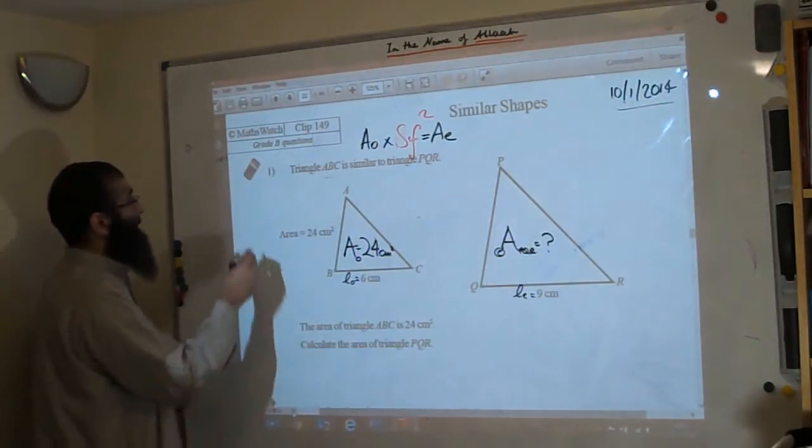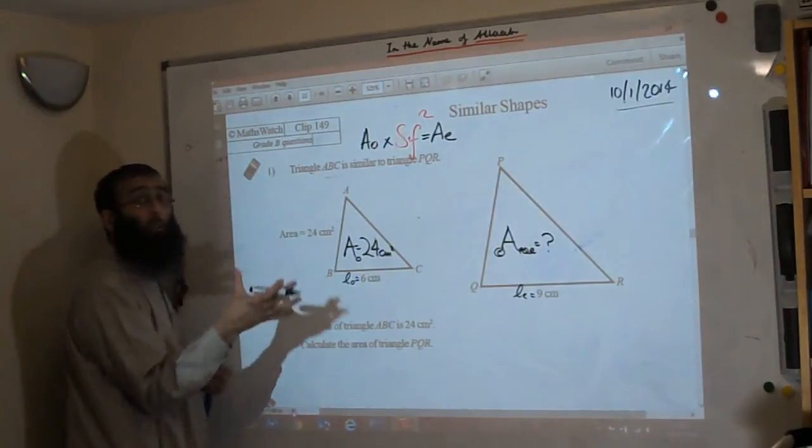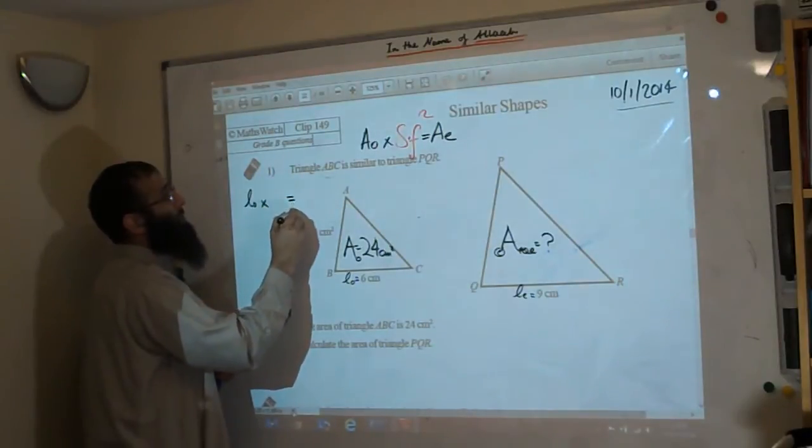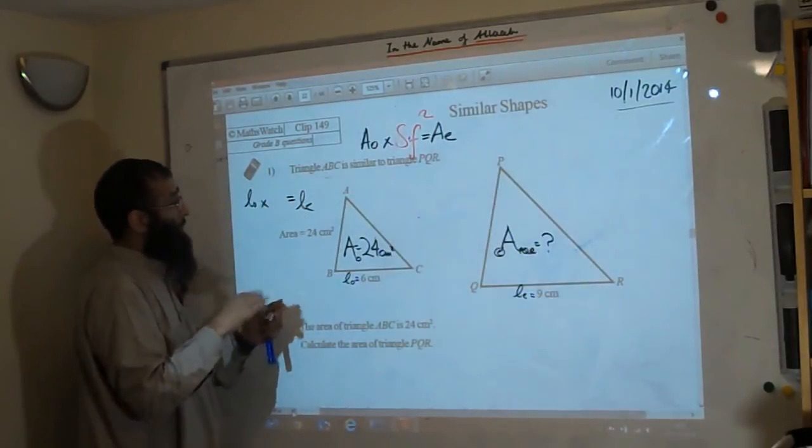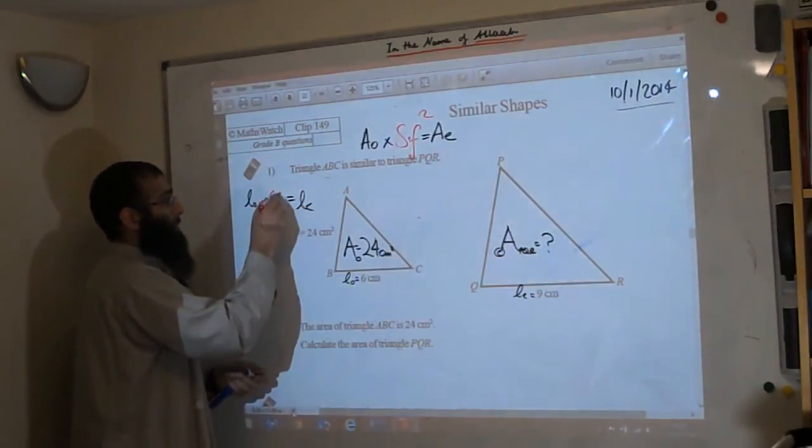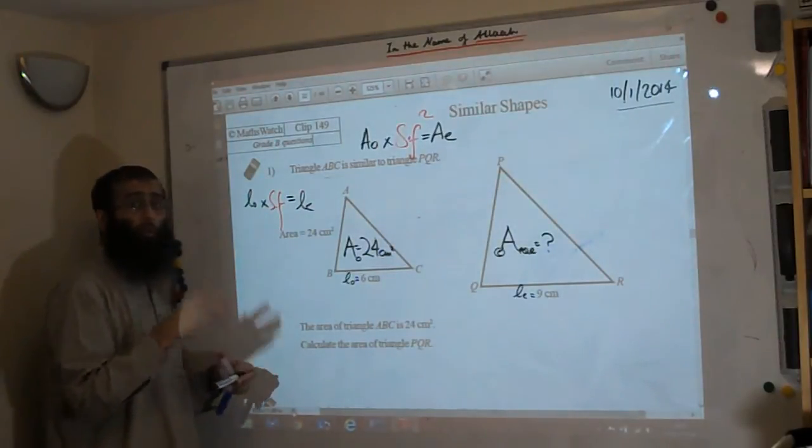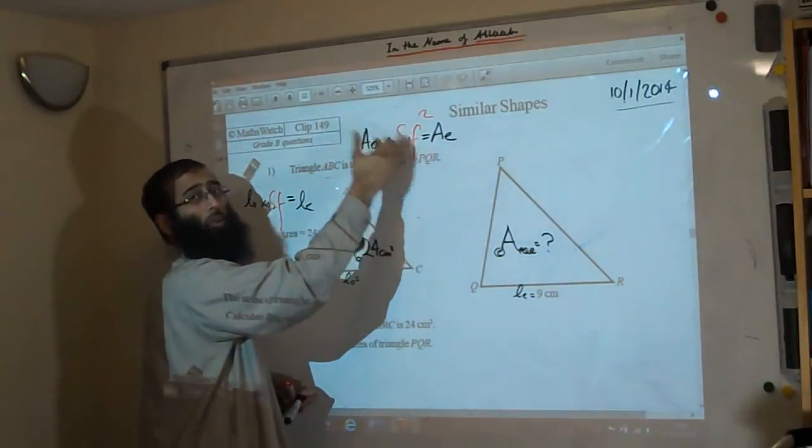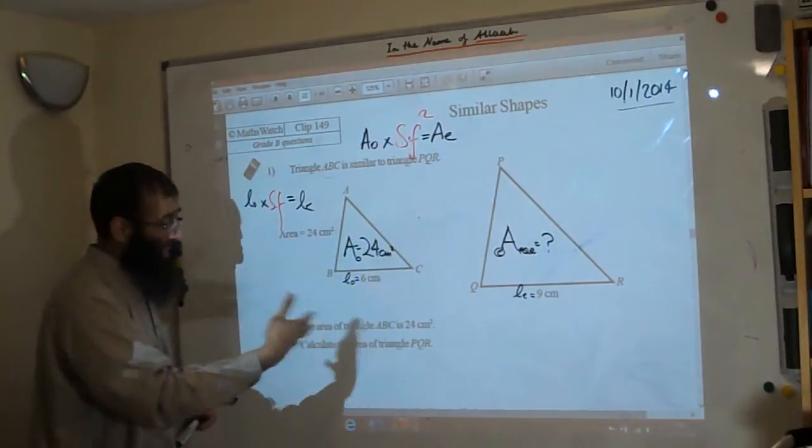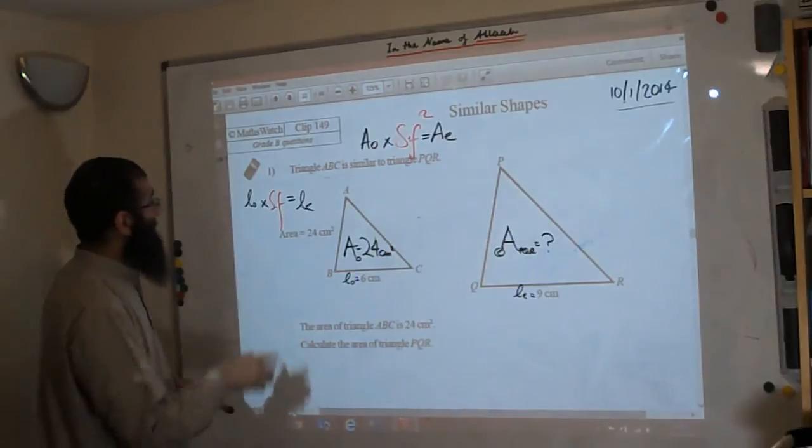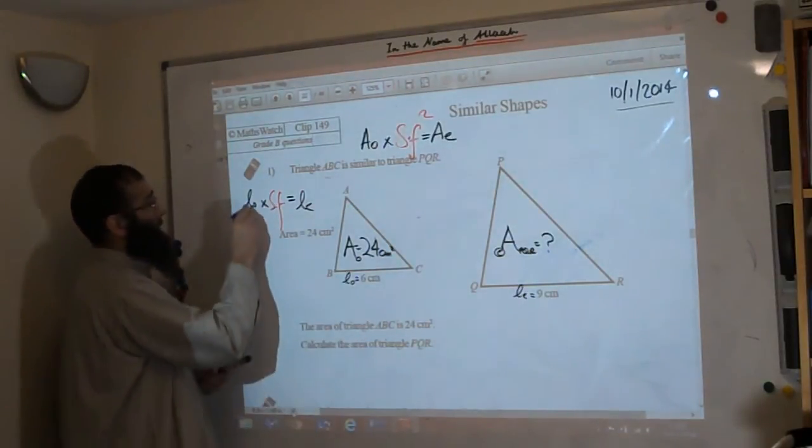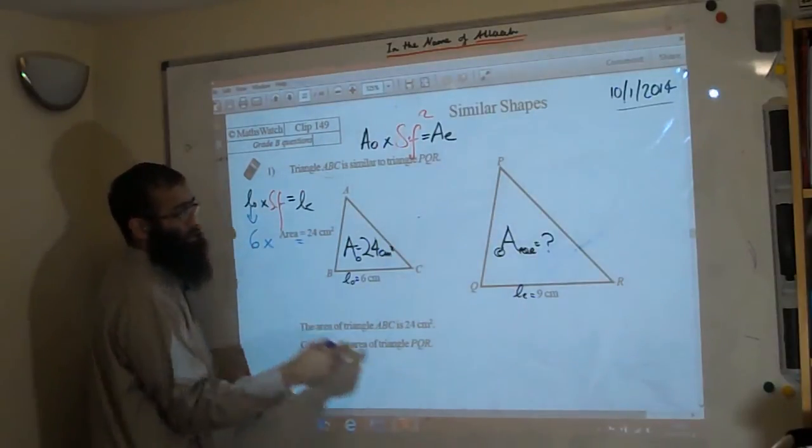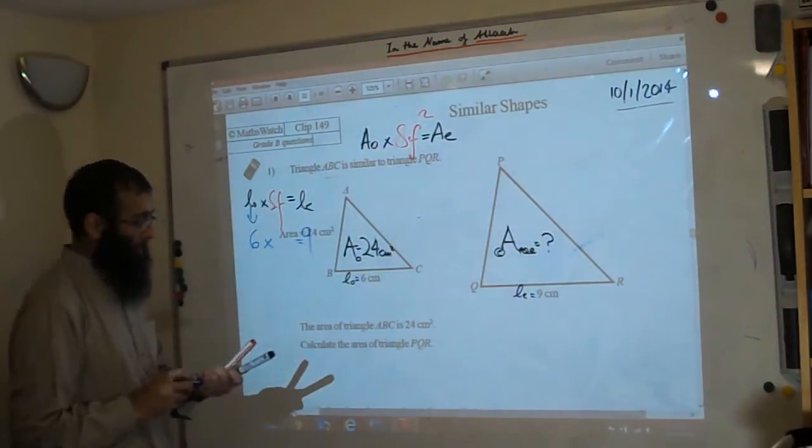So then we use the formula that we used in the previous video: length of the original times by the scale factor equals length of the enlarged. When we do a length calculation, the scale factor is to the power of one. When there is an area one, it's squared, and when we move on to the next question the volume will be cubed. So let's look at this now. We have 6 and the scale factor and then we have 9.